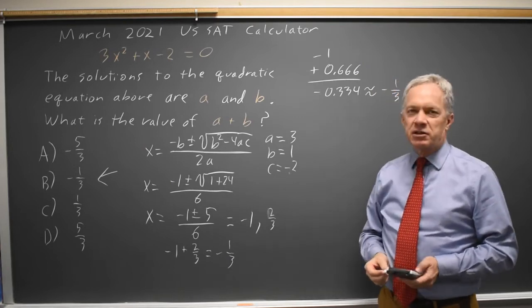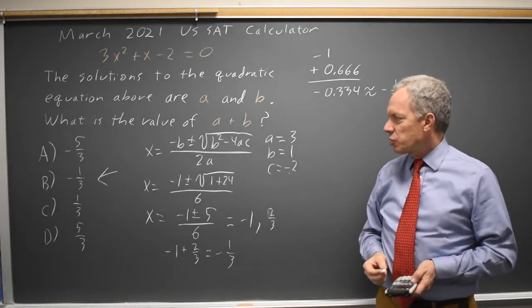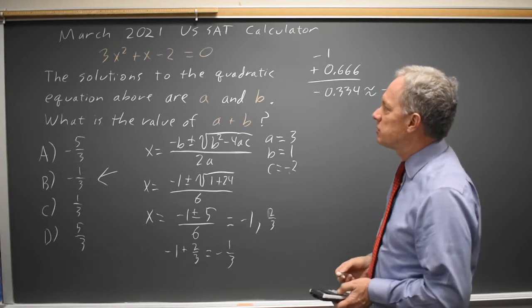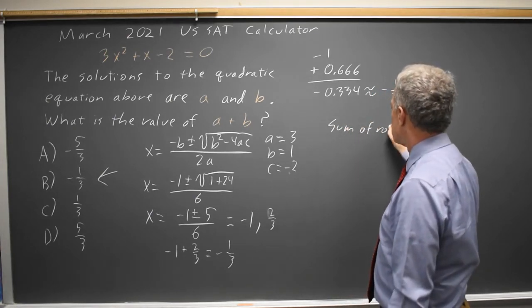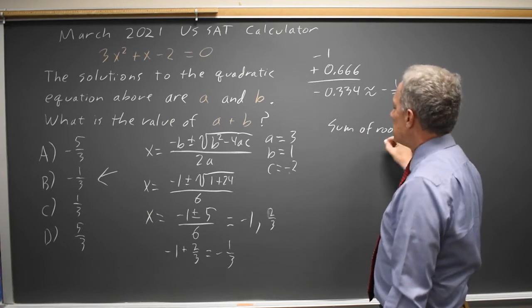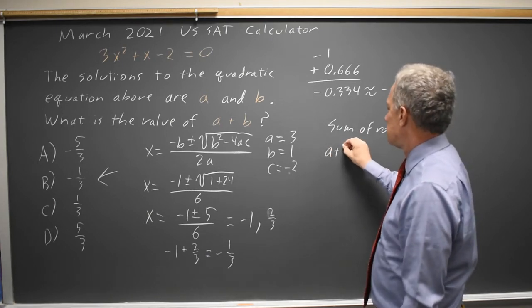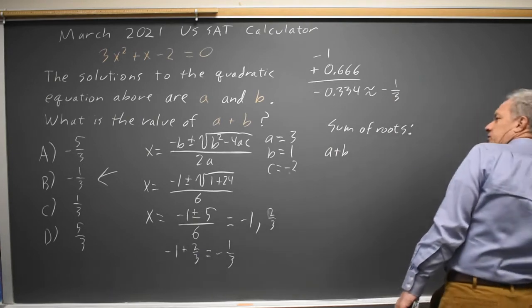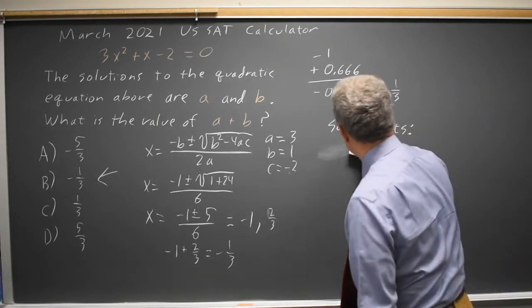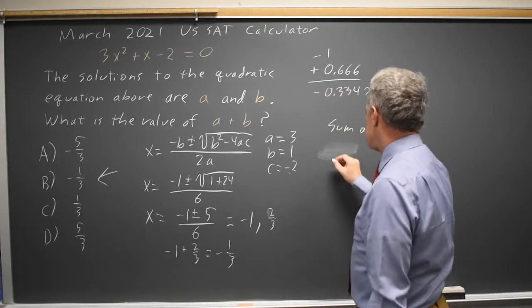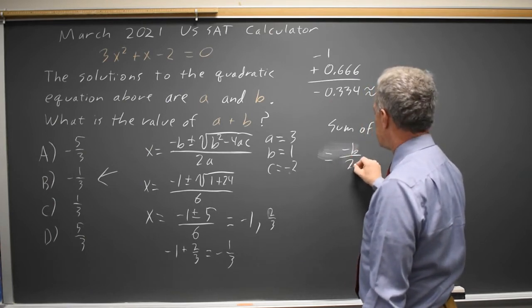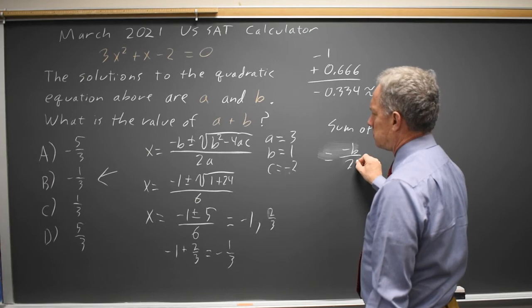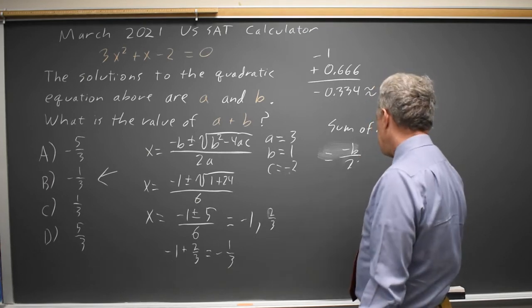And a third option is the sum of the roots is always, calling it A plus B, and I'm also using A and B for the coefficients. So I'll just say it equals negative B over A.